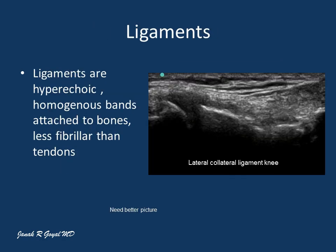The ligaments are hyperechoic homogeneous bands attached to the bones. Here is the lateral collateral ligament — the head of the fibula, the tibia, and the femoral condyle are visible, with the lateral collateral ligament appearing as a hyperechoic band, less fibrillar than the tendon.